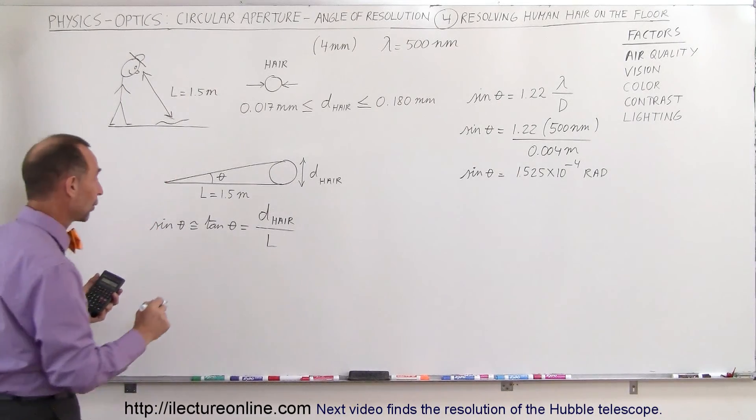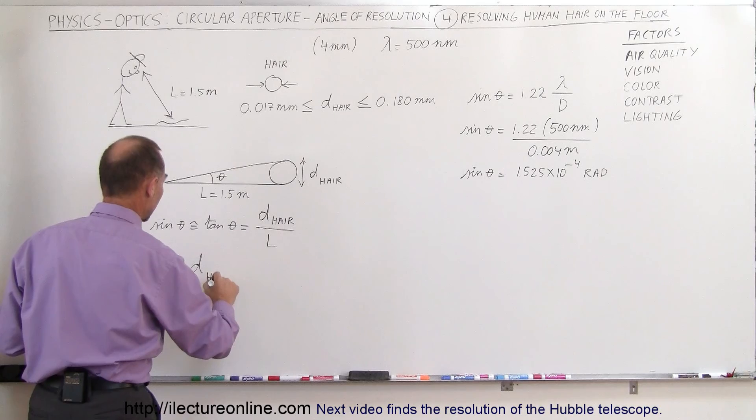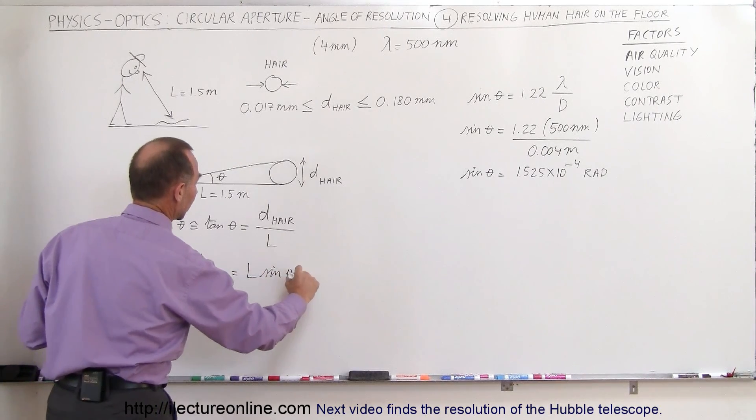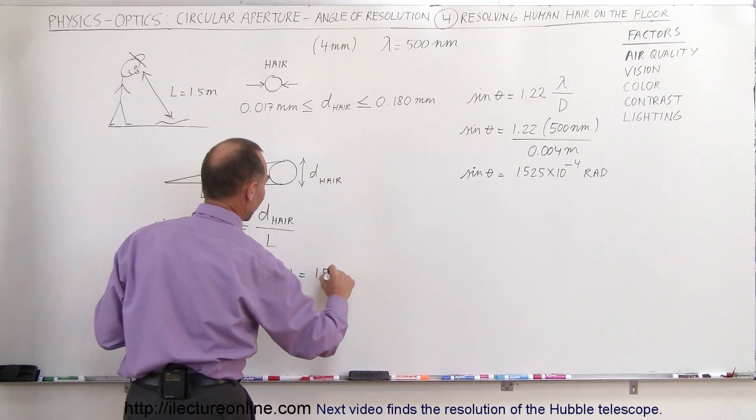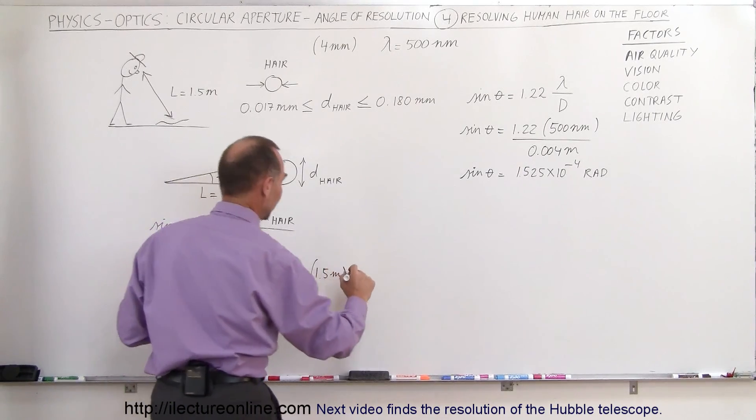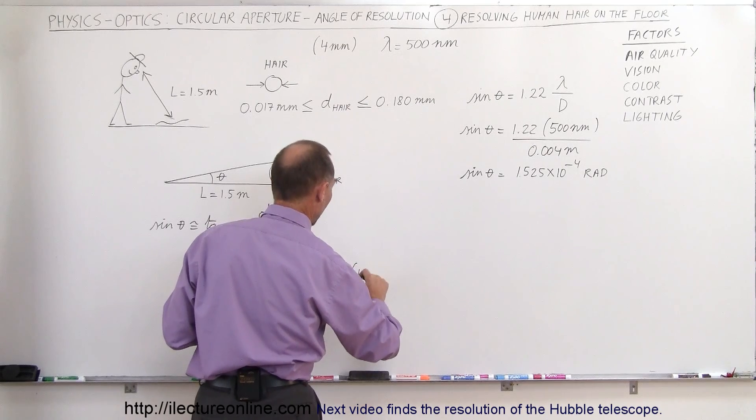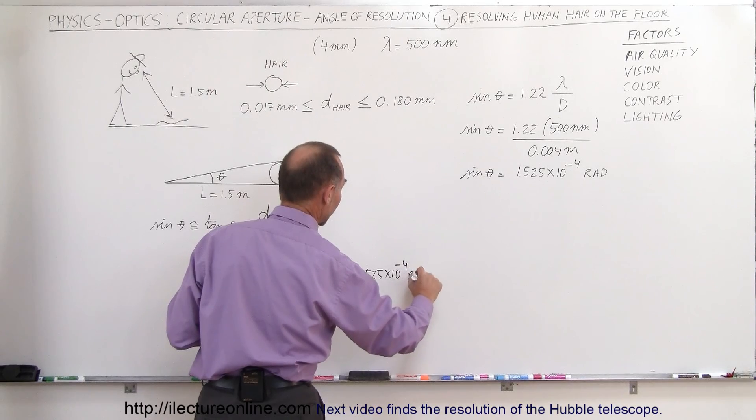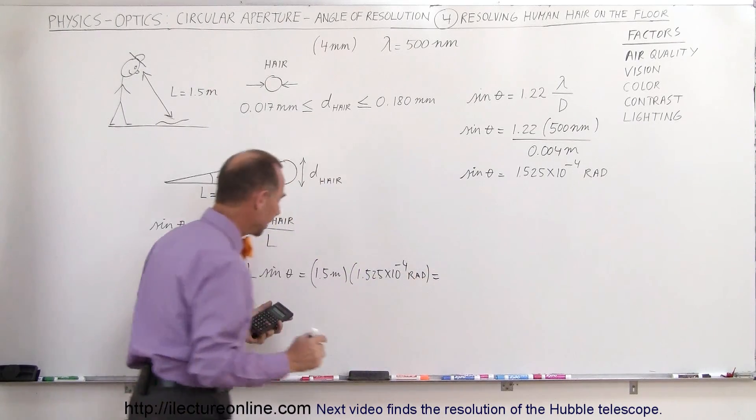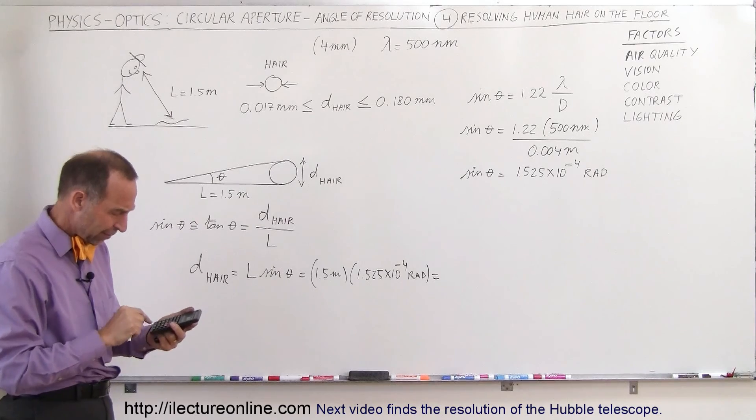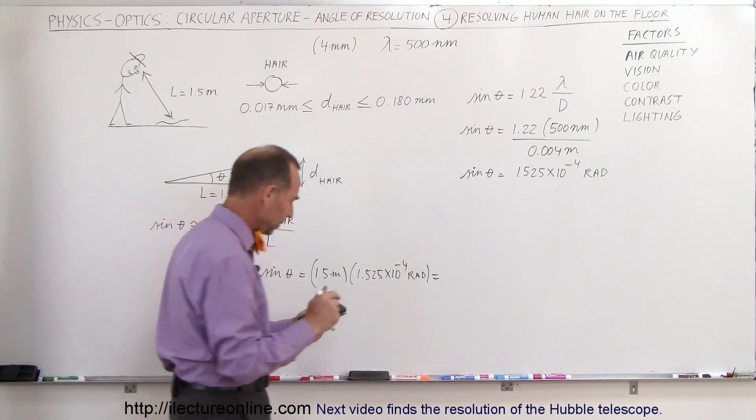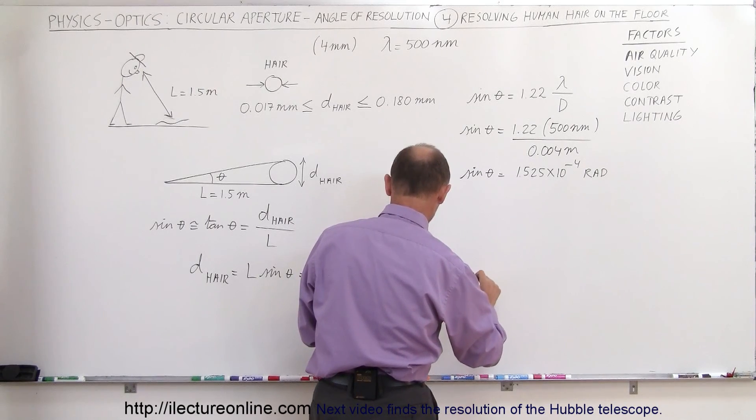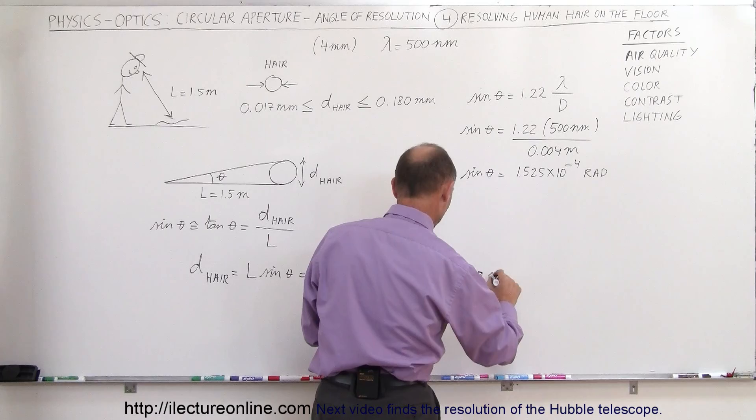Now we can solve for the diameter of the hair. The diameter we're able to resolve equals L times sine of theta, which is 1.5 meters times 1.525 times 10 to the minus 4 radians, equaling 0.229 millimeters.